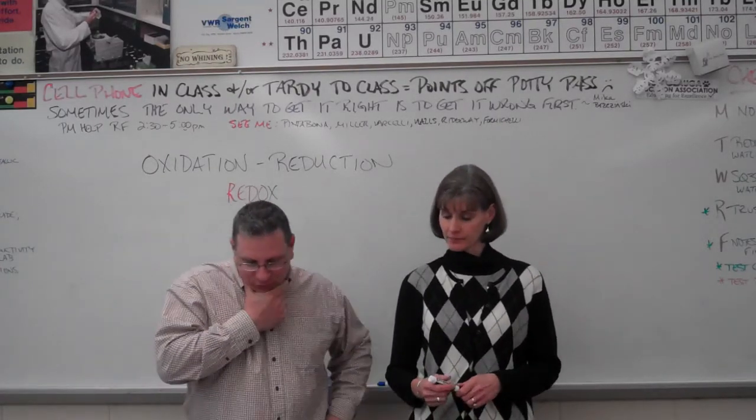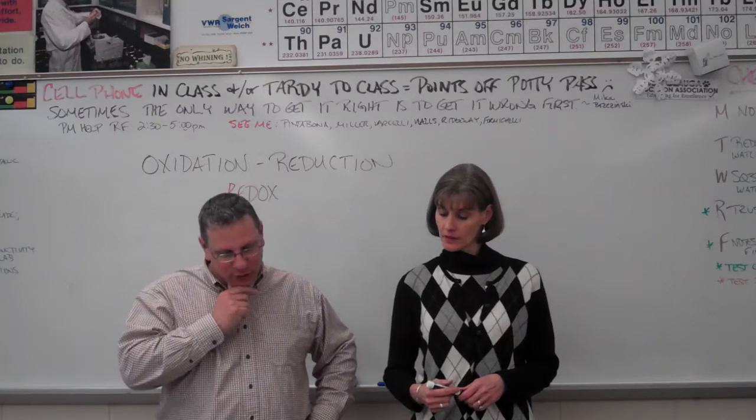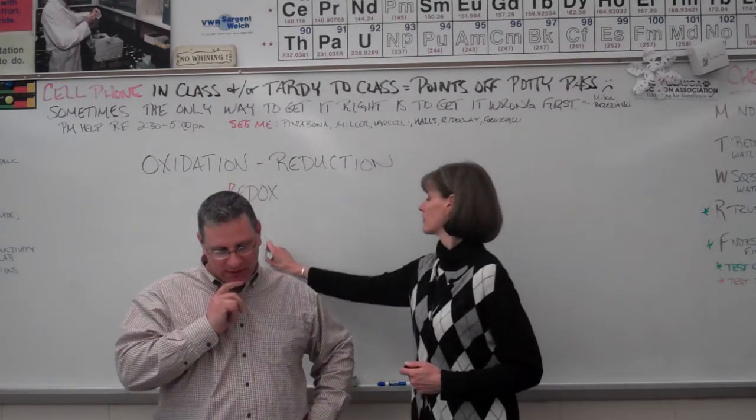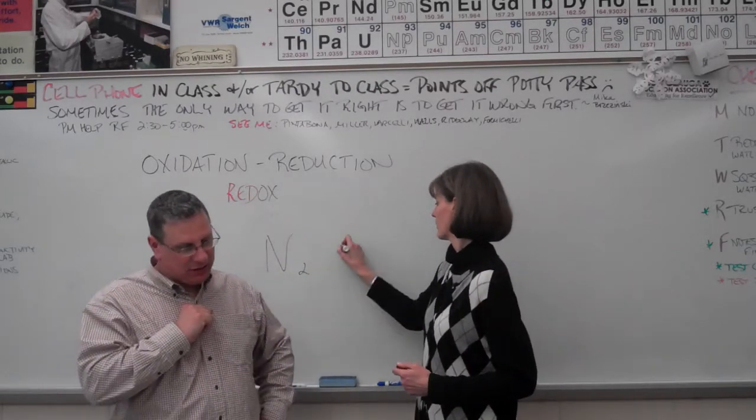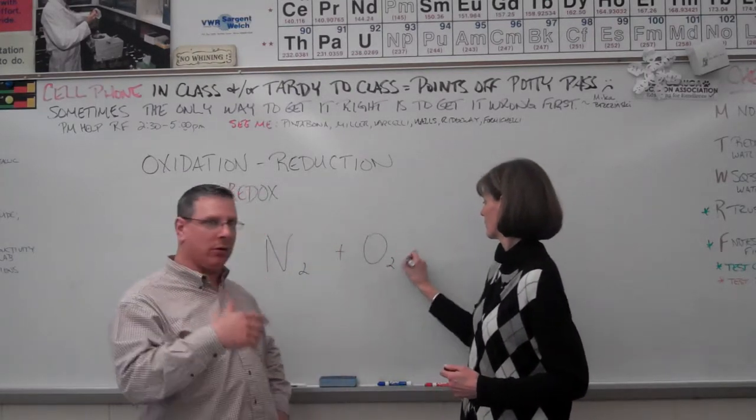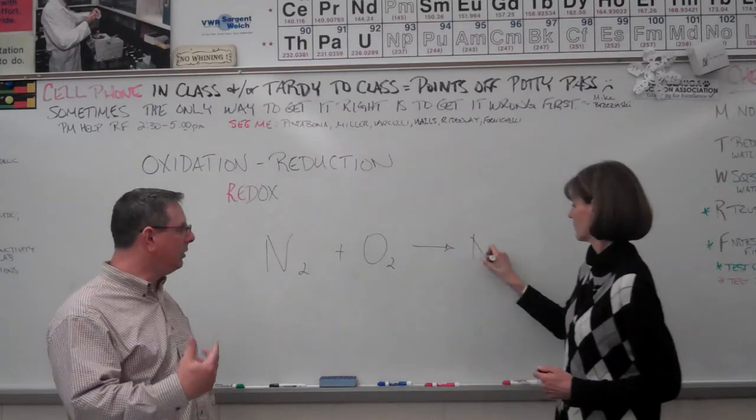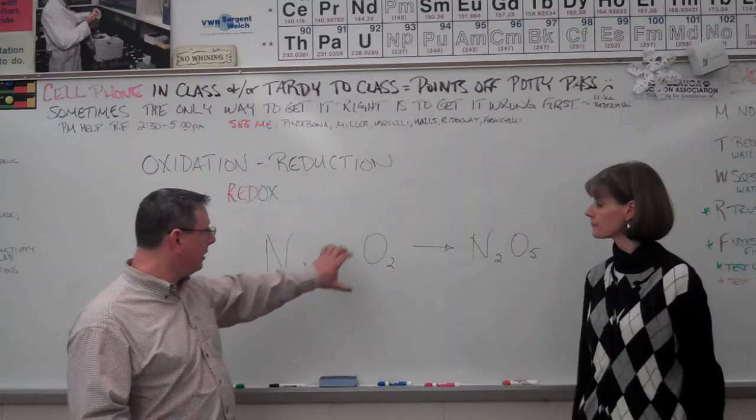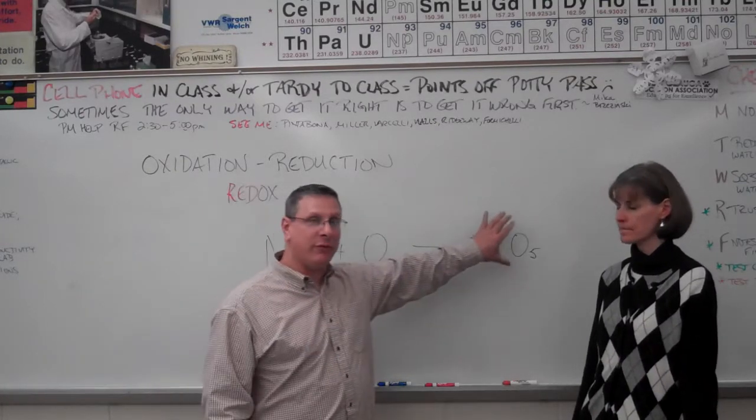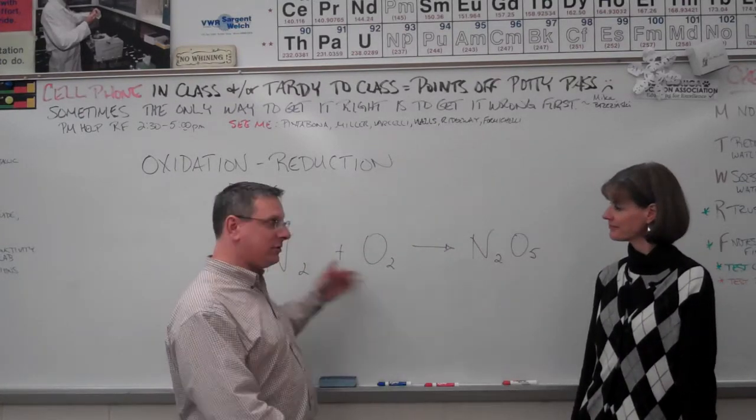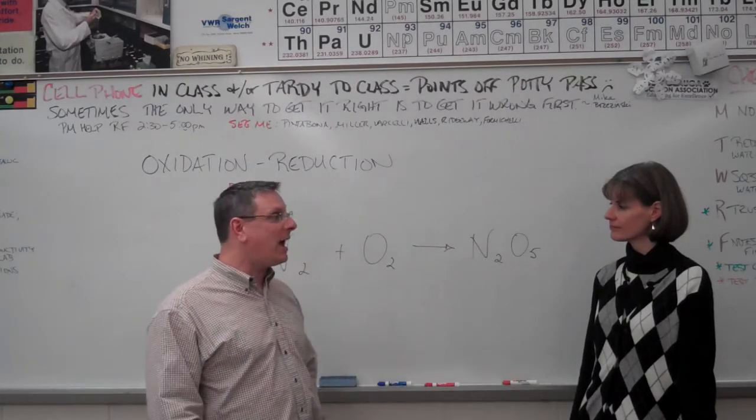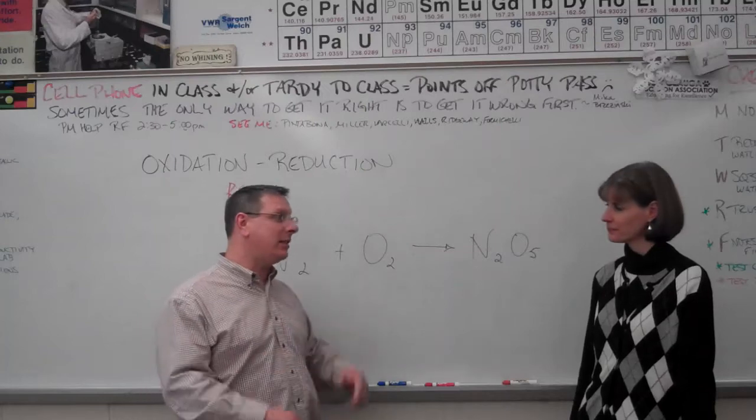So number 15 is how to assign specific oxidation numbers to each of the elements in a given reaction equation or formula. The skill is exactly the same. Here is a formula. Here is a formula. Here is a formula. And if you just put a bunch of formulas all together with some pluses and an arrow, then you've got a reaction equation. The skill is exactly the same.